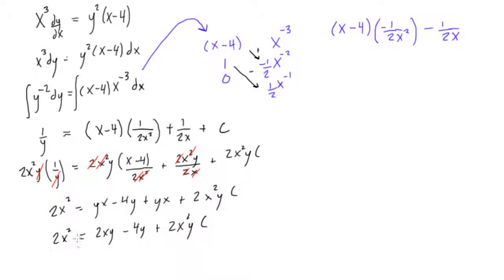Now, the last thing we probably just want to do is just divide everything by 2. So, we can go over here and we will have x squared is equal to xy minus 2y plus x squared y times c.